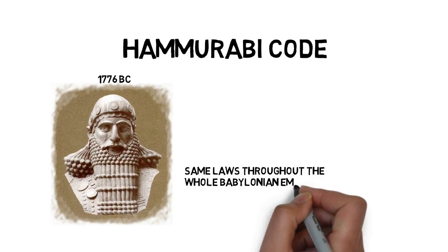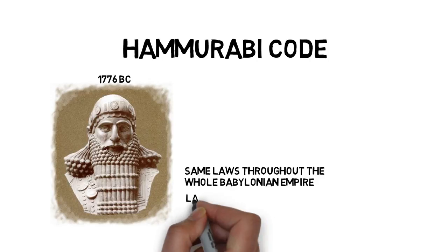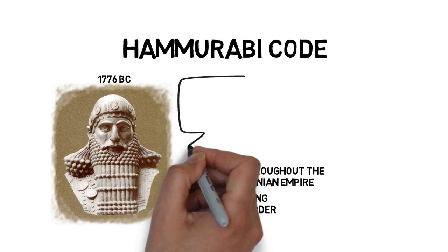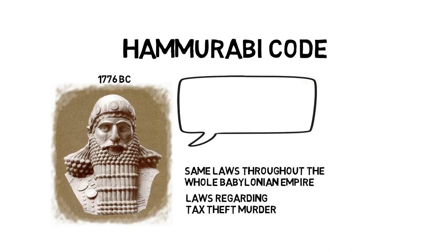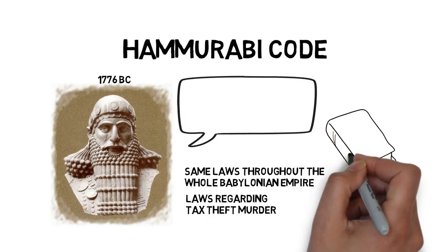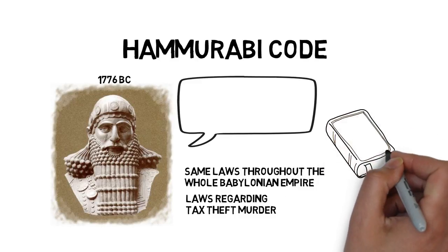This code was a set of laws instated throughout the entire Babylonian empire, governing areas such as tax, theft, and murder. This code of laws established an empire-wide understanding of what was permitted and what was not. Wherever they traveled or traded within the imperial borders, people knew which laws and customs to follow.